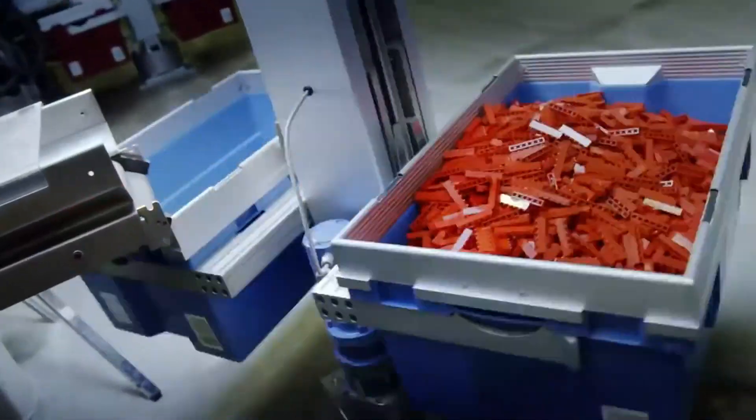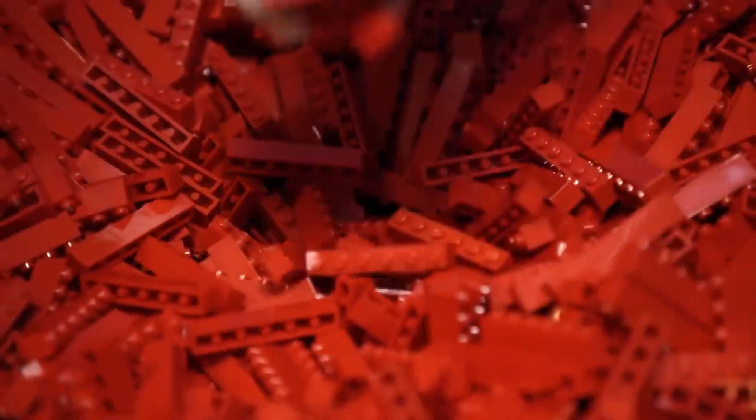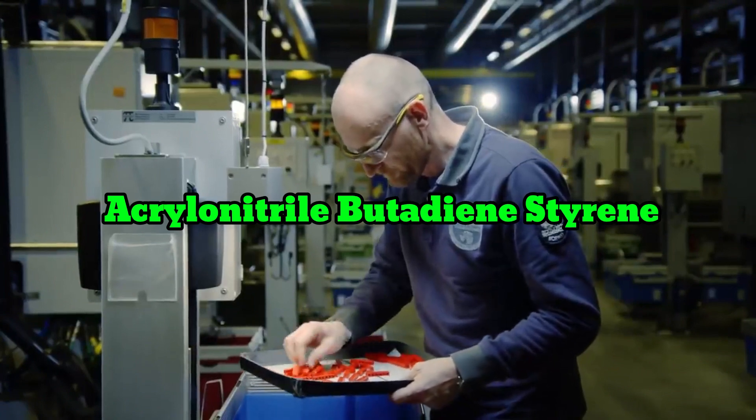Let's start with the basics. Lego bricks are made from a type of plastic called acrylonitrile butadiene styrene, or ABS.